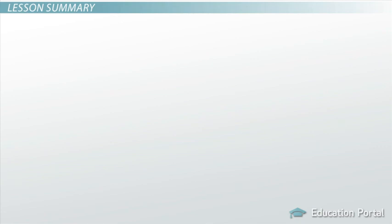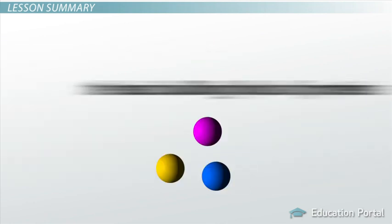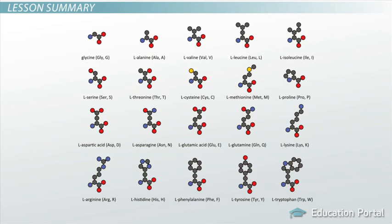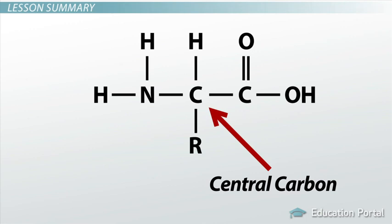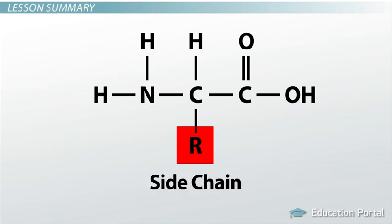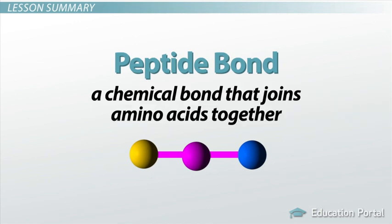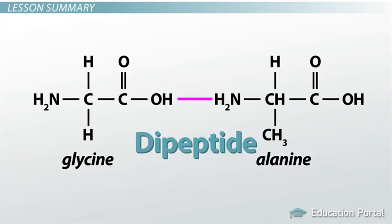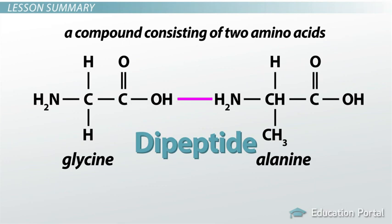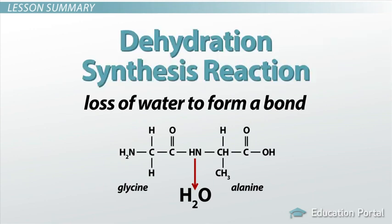Let's review. Proteins are the true workhorses of the body needed for building structures and maintaining life. The basic building blocks of proteins are amino acids. The 20 different amino acids needed by your body all have the same basic structure, which is a central carbon atom attached to a hydrogen atom, a carboxyl group, an amino group, and a variable R group or side chain that gives the amino acid its uniqueness. A peptide bond is a chemical bond that joins amino acids together, where the carboxyl group of one amino acid bonds with the amino group of another. This forms a dipeptide, which is simply a compound consisting of two amino acids. It requires the loss of water to form a bond, which is a process called a dehydration synthesis reaction.